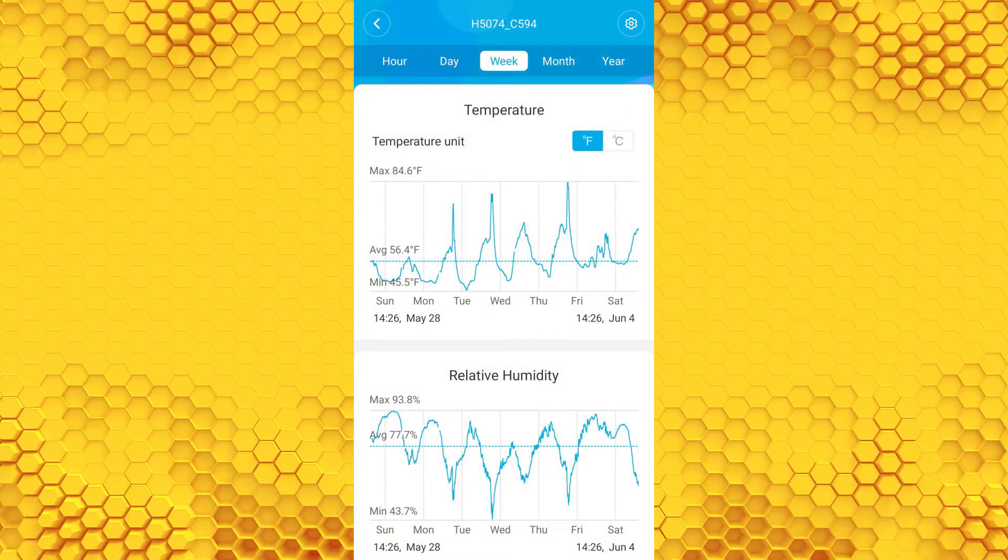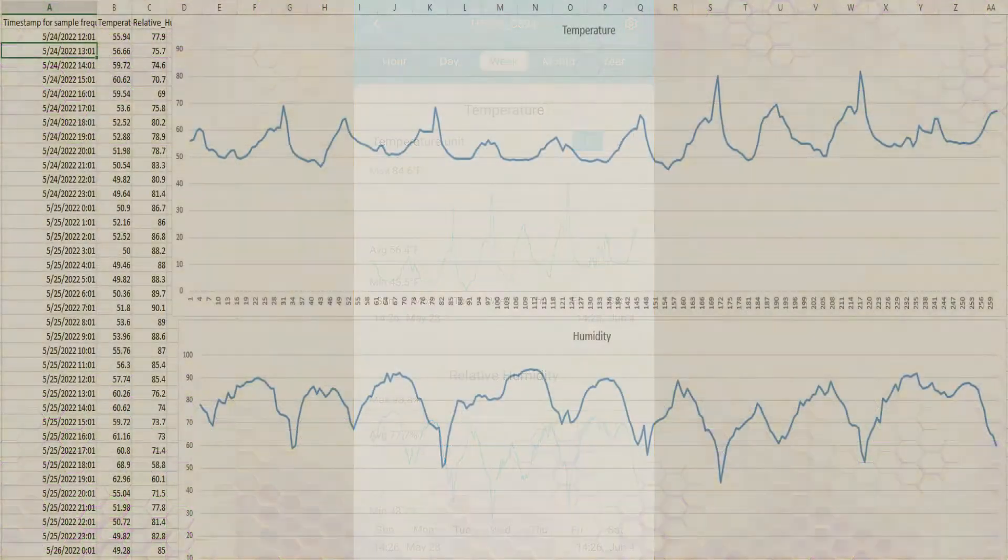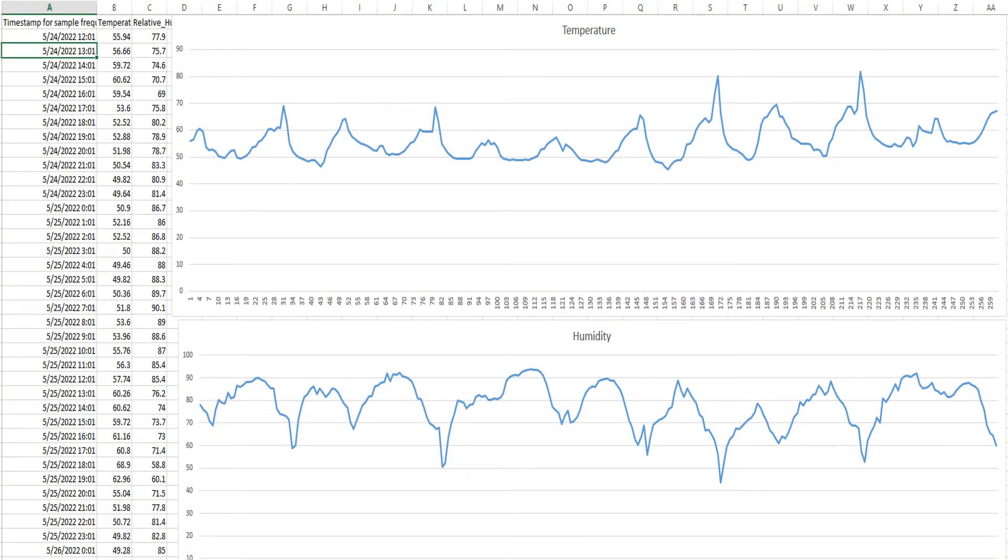This is the reading from the $15 sensor in one of my swarm traps. As you can see, there is no activity in the hive.